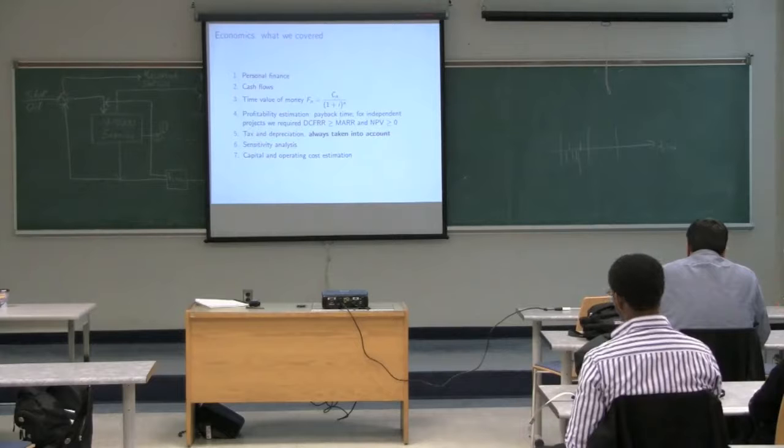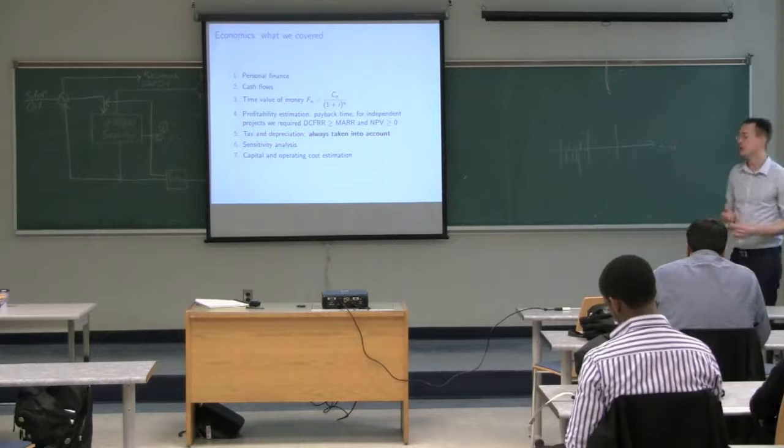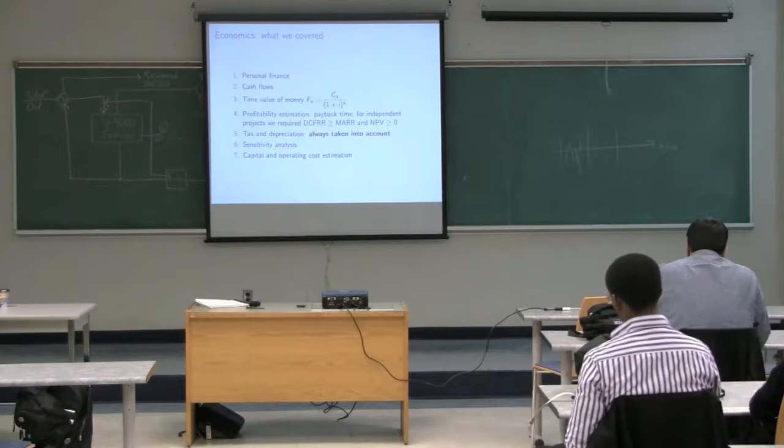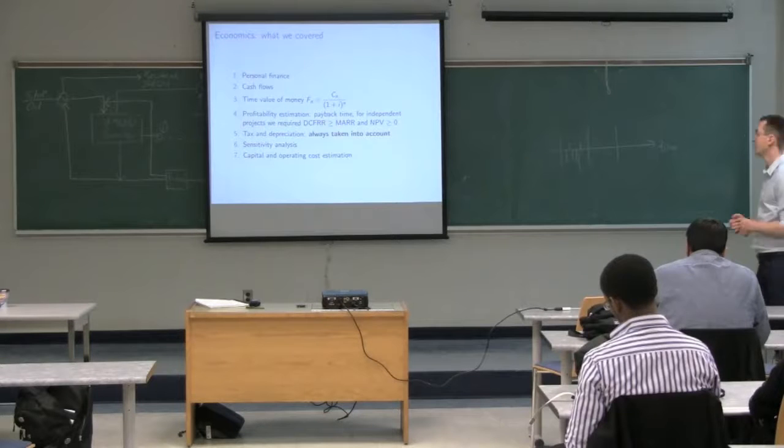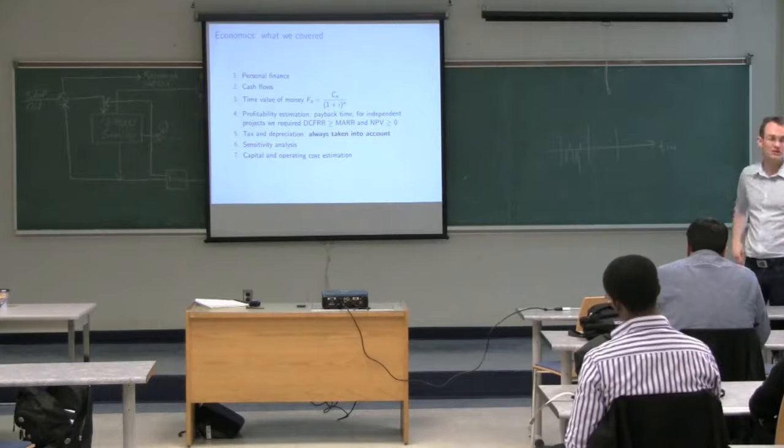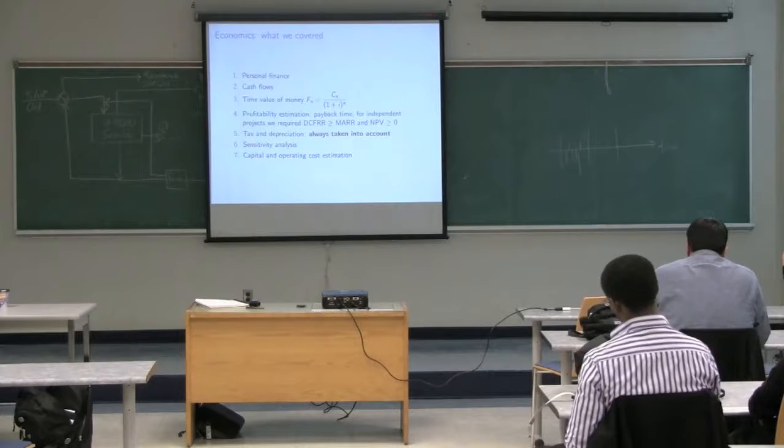And the next step in economics was we looked at profitability estimation. Where we looked at payback times. And particularly, we only looked at independent projects in this course. Where we require the DCFRR to exceed the NARR. And we require the NPV to be greater than zero. So, we require all of those conditions to be true for independent projects. We did not look at evaluating usually exclusive projects in this course. I cut out that topic. It is in the course notes. So, if you do see it there, you can skip over it. It won't be in the exam. But it is, certainly something that you can read over if you need it for future when you're working in a company.